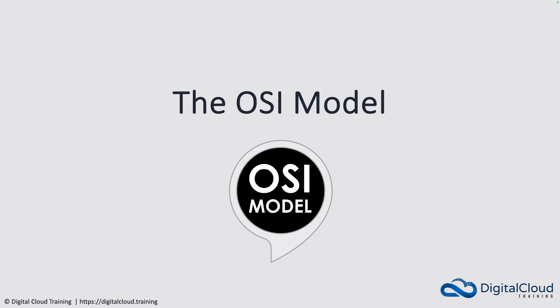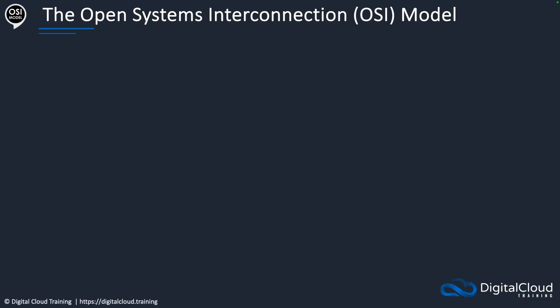Welcome to this lesson on the OSI model. This is a fairly complex topic, but I'm going to try and break it down and make it as simple as possible. It's a very important concept to understand. This model is known as the Open Systems Interconnection model, OSI, and it's used in networking very readily — you're going to hear it referred to all the time. People talk about layer seven load balancers, layer four load balancers, what's happening at layer two, and if you don't understand what that means, that's going to put you at a disadvantage.